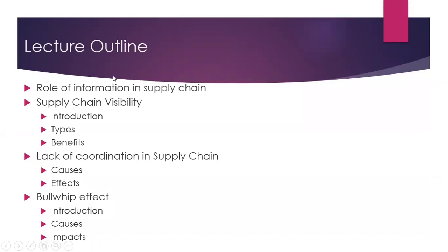This is my lecture outline. First, I will talk about the Role of Information in Supply Chain. Then Supply Chain Visibility — its Introduction, Types, and Benefits. Then Lack of Coordination in Supply Chain — its Causes and Effects. Then the Bullwhip Effect — its Introduction, Causes, and Impacts.